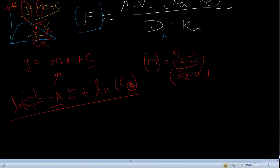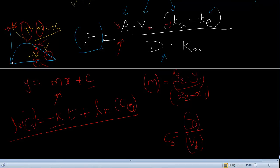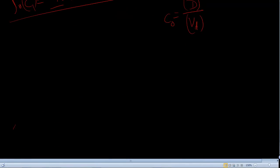Once I have the intercept, I can plug it into the equation. Volume of distribution is found from C equals dose divided by VD, so once you extrapolate and know the initial concentration and the dose, you can find VD. You can also find the absorption rate constant ka using the method of residuals — by subtracting initial concentration values from the extrapolated values. Let's get into a worked problem in the next video.